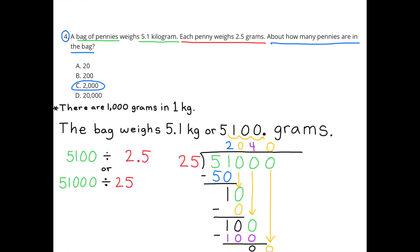Number 4. A bag of pennies weighs 5 and 1 tenths kilogram. Each penny weighs 2 and 5 tenths grams. About how many pennies are in the bag? There are 1,000 grams in 1 kilogram. The bag weighs 5 and 1 tenths kilogram, or 5,100 grams. So 5,100 divided by 2 and 5 tenths equals 2,040. There are about 2,000 pennies in the bag. I chose C.